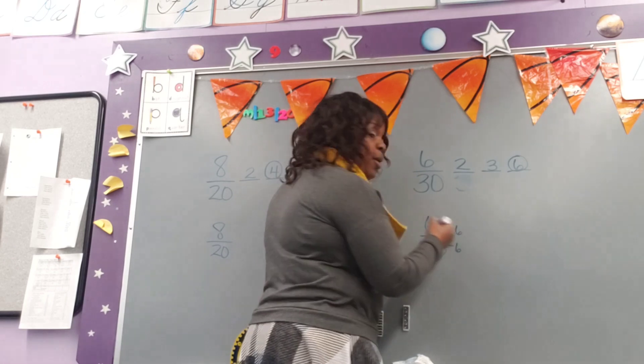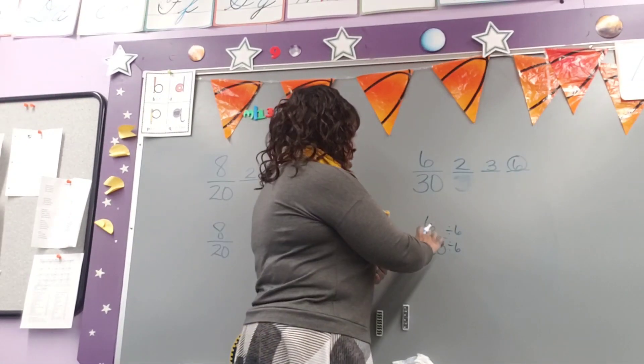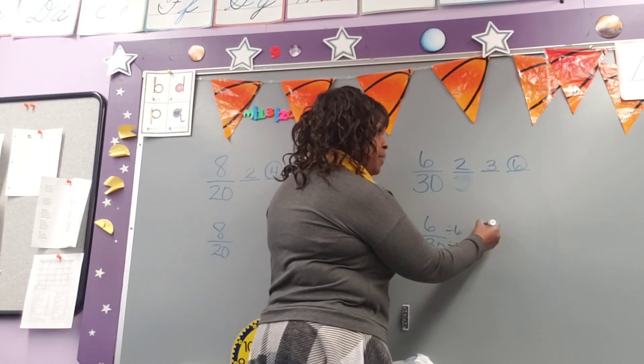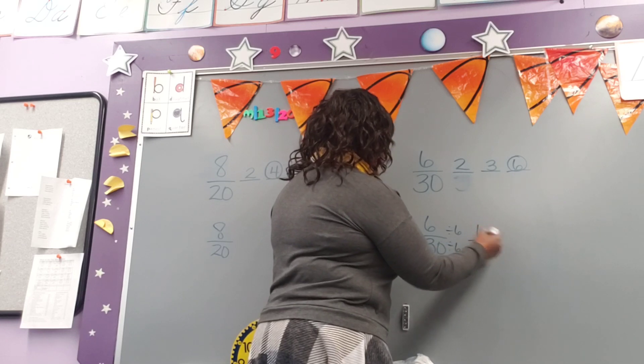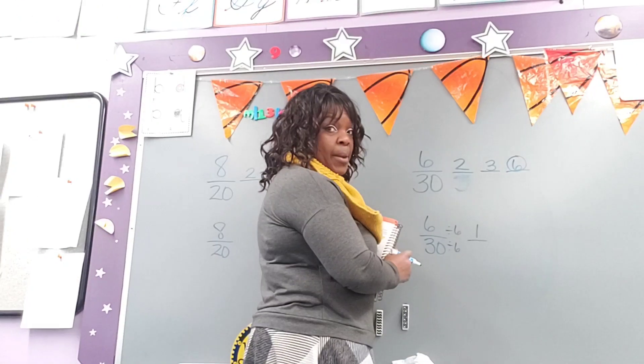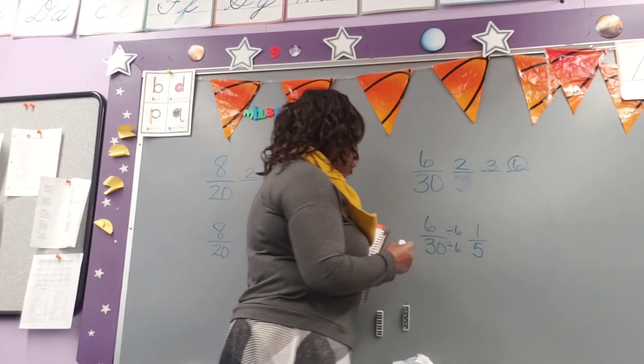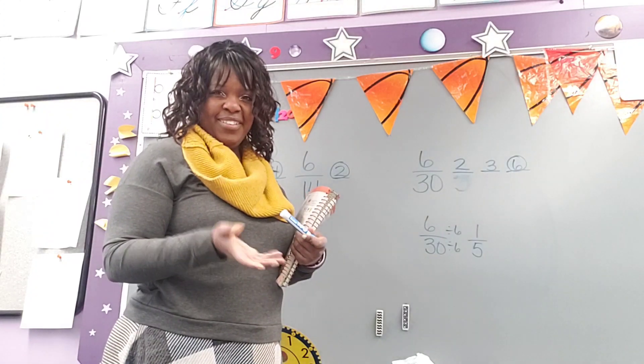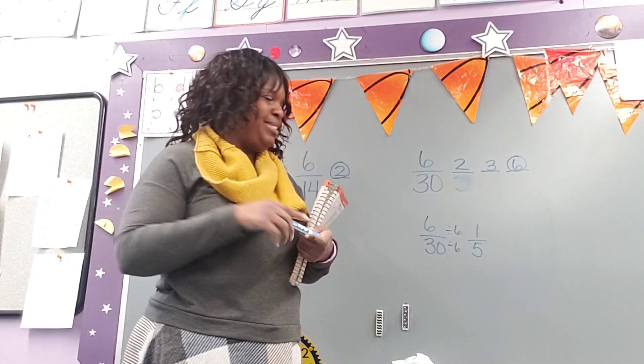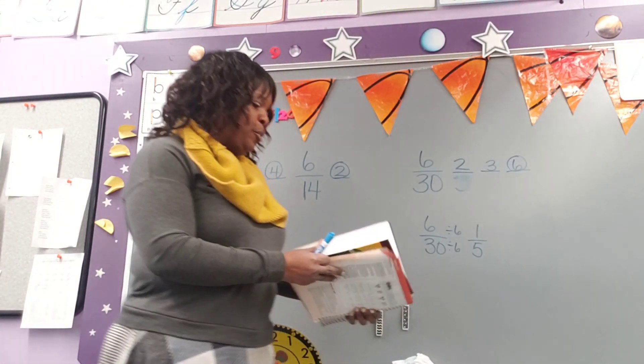That way, we can get to the lowest fraction to reduce it completely. Whatever we do to the top, we must do to the bottom. 6 divided by 6. Good. And 30 divided by 6. Excellent. So our answer for our reduced fraction would be 1/5. Does that make sense? Hopefully that does make sense, and you're understanding that a little bit better.